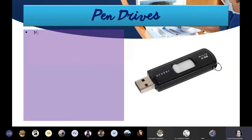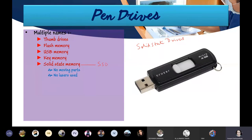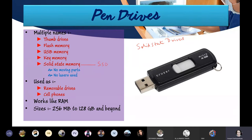Next is pen drives - they have multiple names: thumb drives, flash memory, USB memory key, memory solid-state memory. SSDs - solid-state drives - are also becoming very popular. They are around 10,000 times faster than usual SATA hard disk drives, have no moving parts, no lasers used. They are used as removable drives and in cell phones. Sizes range from 256 MB to 128 GB and beyond.